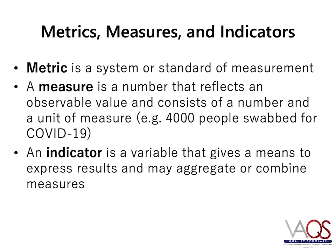You have heard the terms metrics, measures, and indicators in your work. What are they and what's the difference between them? A metric is a system or standard of measurement — it generally refers to all the ways we measure a dimension or criteria of a construct and how we measure something over time. A measure is a number that reflects an observable value and consists of a number and a unit of measure — for example, 4,000 people swapped for COVID-19 in some period of time. An indicator is a variable that gives a means to express results and may aggregate or combine measures.